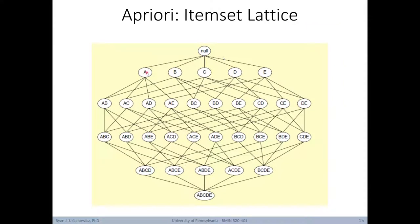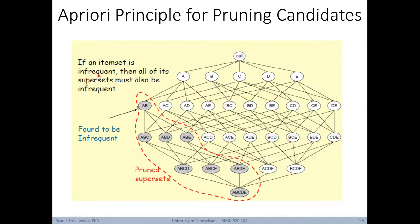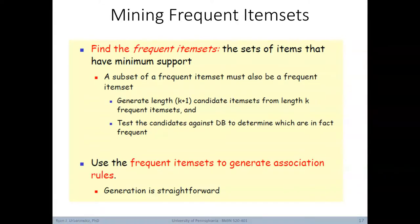Here's a way to illustrate the association rule mining search, starting with individual items, then unique pairings, followed by unique triples, unique quadruples, and finally all five together. The goal with a priori is to identify which combinations have high support or confidence. Using the knowledge that if any item set is infrequent, then all of its supersets must also be infrequent, we can prune from consideration all supersets of any infrequent set. A priori will generate length k+1 candidate item sets from any length k frequent item sets, and test these candidates against the database to determine which are frequent.